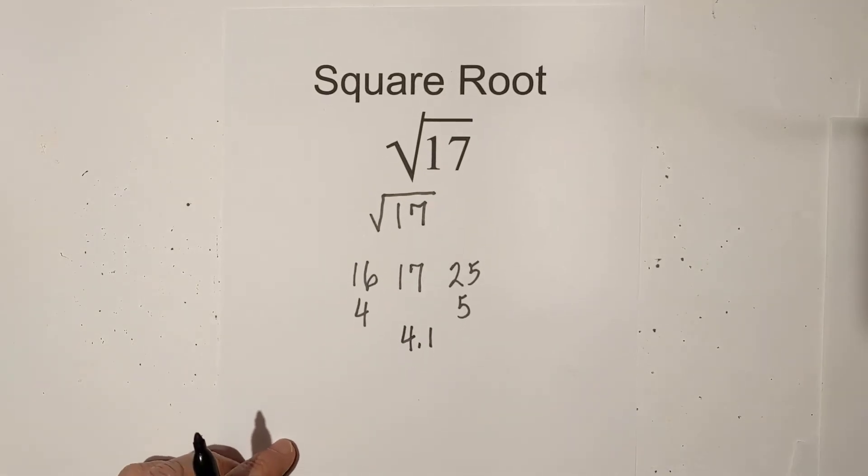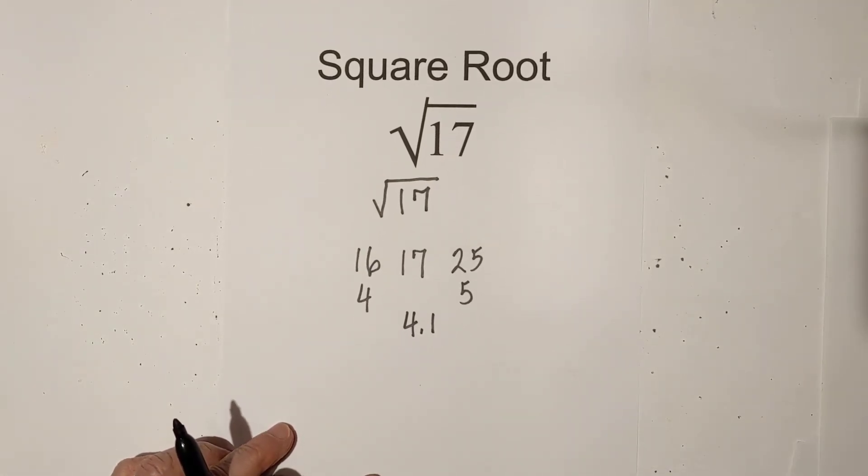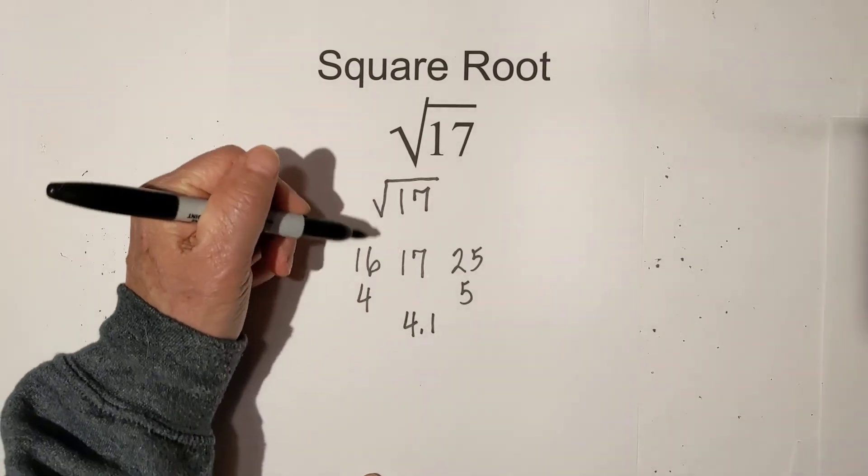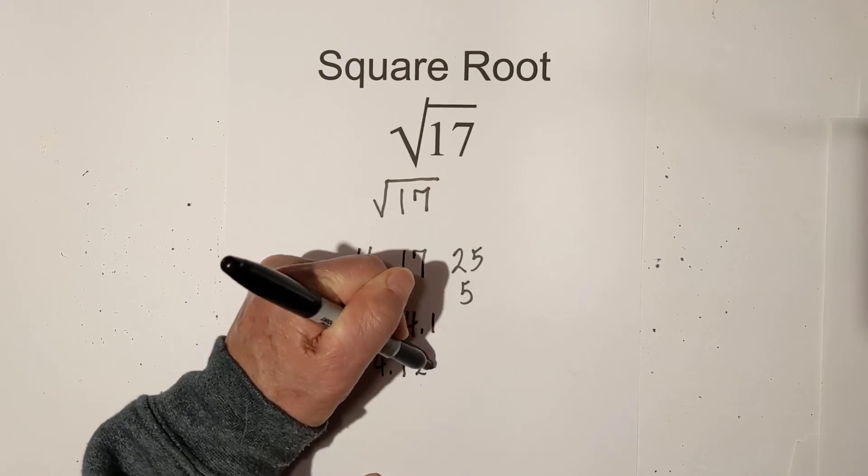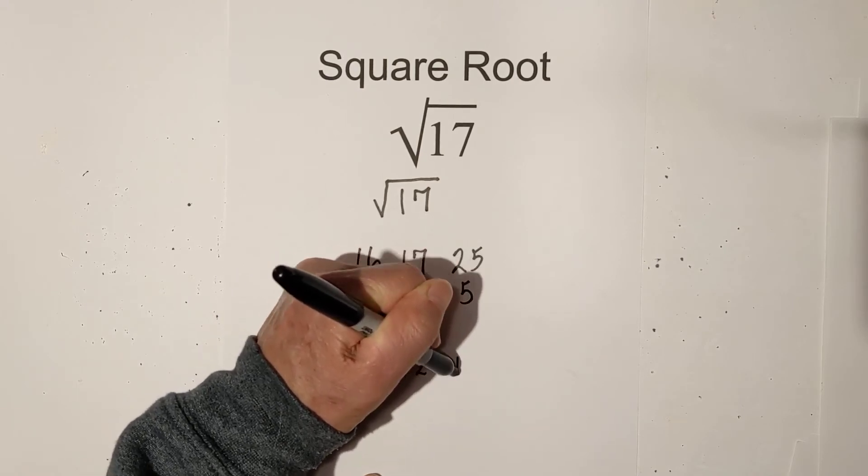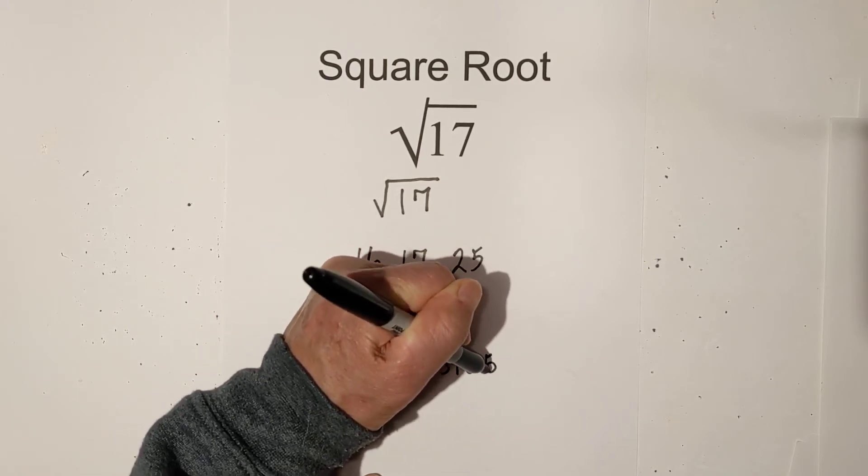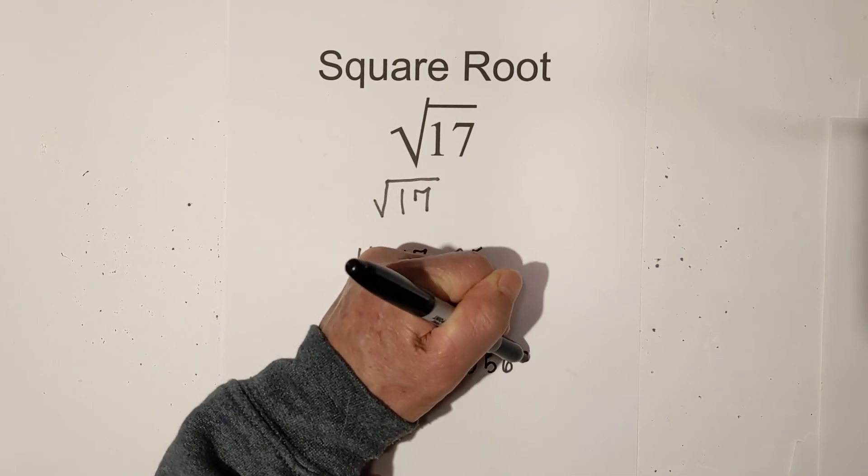Now, if you were to put it in a calculator, then you would get this number. The square root of 17 is 4.12310563.